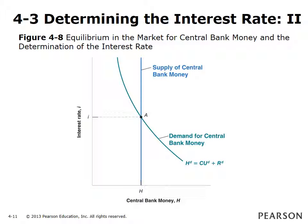Figure 4.8 shows an alternative way of understanding the determination of the interest rate. The interest rate is determined by the demand and supply of central bank money, which is called high-powered money or the monetary base. Money supply is a multiple of the monetary base. The money multiplier equals money supply divided by the monetary base. Essentially, the central bank controls the money supply by controlling the monetary base. In a checkable deposits-only economy, the money multiplier is 1 over the required reserve ratio.